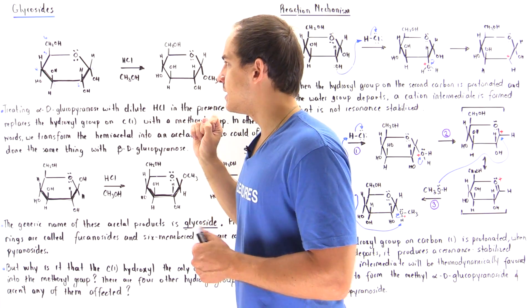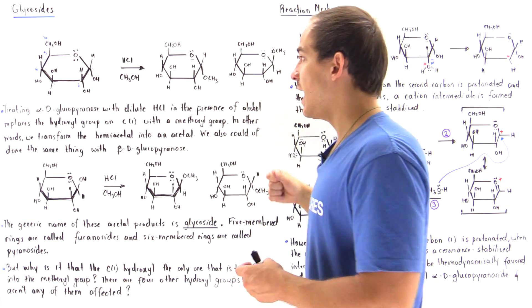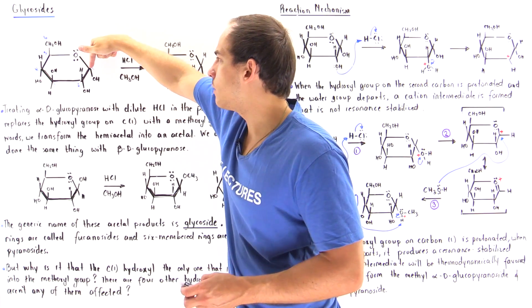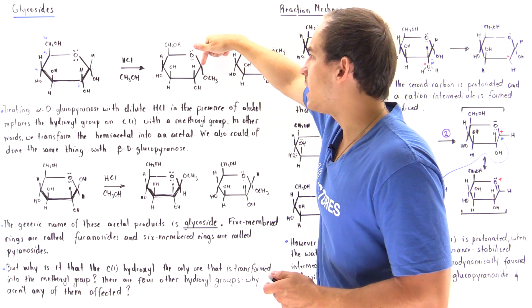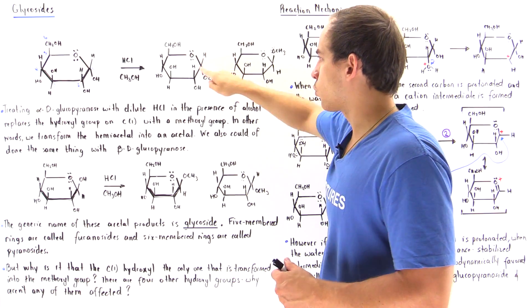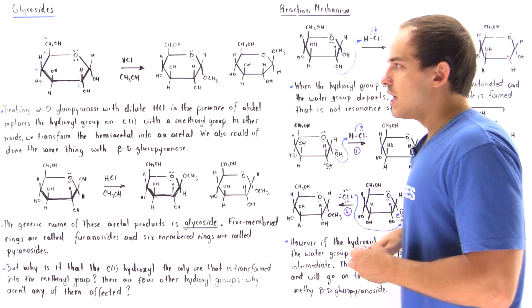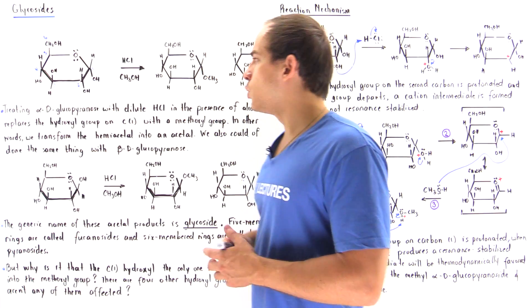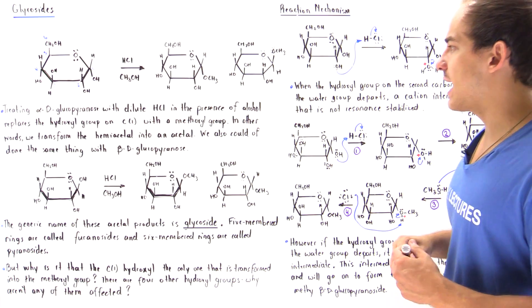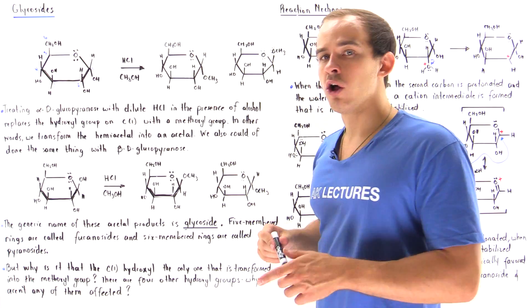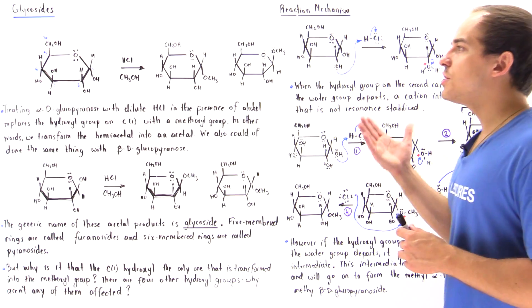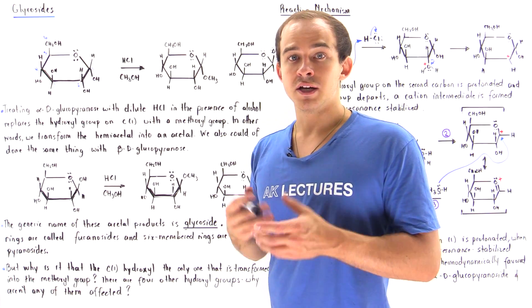Notice that the net result of this reaction is the replacement of the hydroxy group on carbon number one with the methoxy group on that same carbon. The only difference between these two products is the orientation of this methoxy group. So treating alpha or beta D-glucopyranose with dilute hydrochloric acid in the presence of alcohol replaces the hydroxyl group on carbon number one with the methoxyl group on that same carbon.